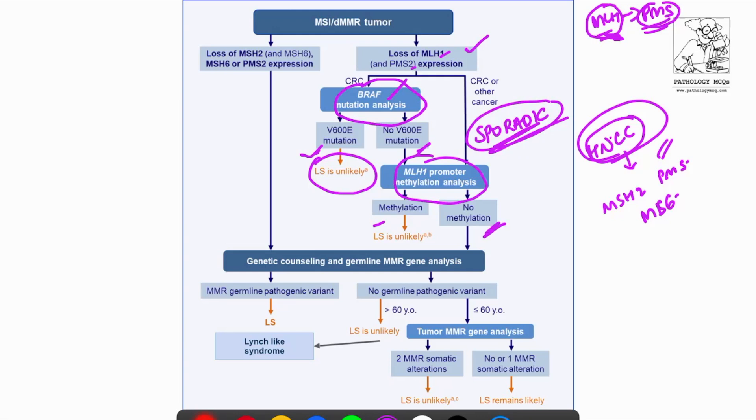If there is no germline mutation, then even in some, a few cases where you will find only MLH1 and PMS2 expression loss, you might find germline mutations as well. In that case, it might still be a Lynch syndrome. Again, the possibility is very low. But if you see there is a loss of MSH2, MSH6 and PMS2 expression, then the next best step is to do a germline MMR gene analysis by PCR. If there is a pathogenic variant in either of these, then it could be a Lynch syndrome.